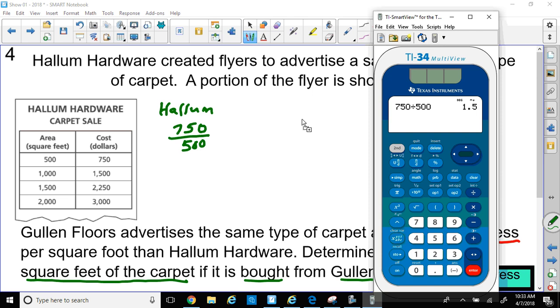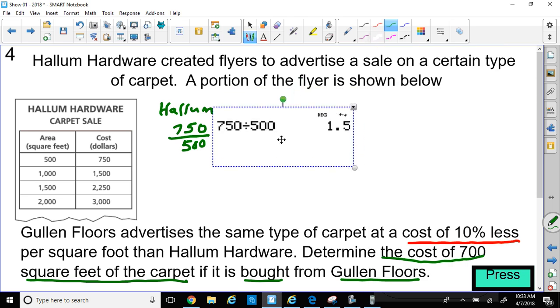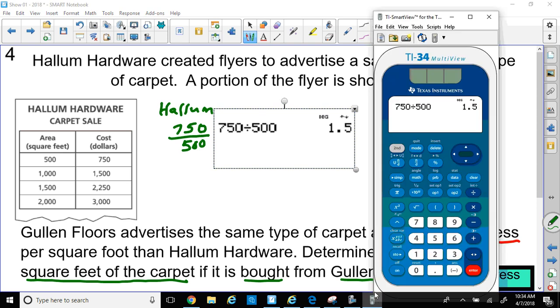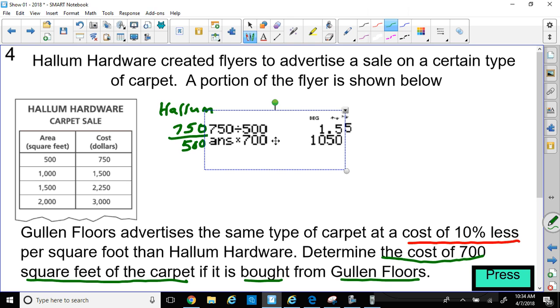$1.50. So it's going to cost $1.50 per square foot. So it's going to cost $1.50 for one square foot of carpet. They want to know how much is the cost of 700 for Gullen. So we better find out the cost of 700 for Hallum. So let me get my calculator back. Let me write times. So it's going to take that answer of $1.50, multiply it by 700, because I just found the unit rate. And it's going to cost them $1,050 for 700. So that's Hallum's cost for 700.